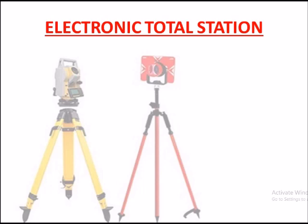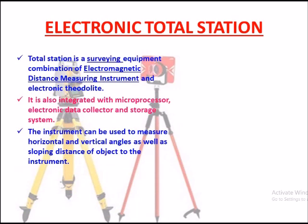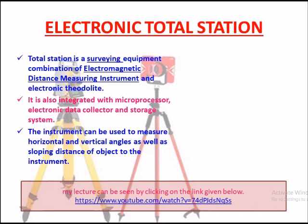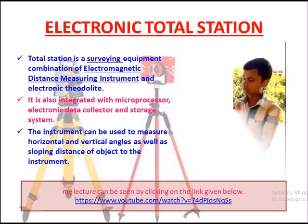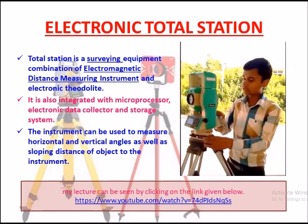Electronic total station. A total station is a surveying equipment combining an electromagnetic distance measuring instrument and an electronic theodolite. In this figure, advanced surveying is done by me with the help of the total station.